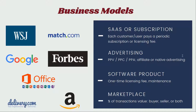Then we have a very common model — the marketplace — where you make money on a percentage of transactions. You don't actually own anything; you put buyers and sellers together. Depending on the marketplace, you can charge either the buyer, the seller, or both. There are many examples: Eventbrite, Delivery.com, and of course Amazon, along with many other companies that use this model.